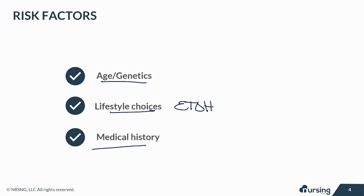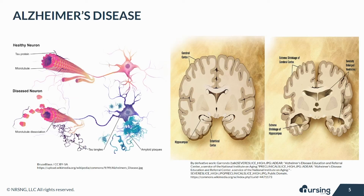AIDS patients sometimes suffer from AIDS-related dementia, which again can happen despite age. So let's talk Alzheimer's disease. This is the most common form of dementia. The hallmark of Alzheimer's disease is what we call plaques and tangles in the brain.